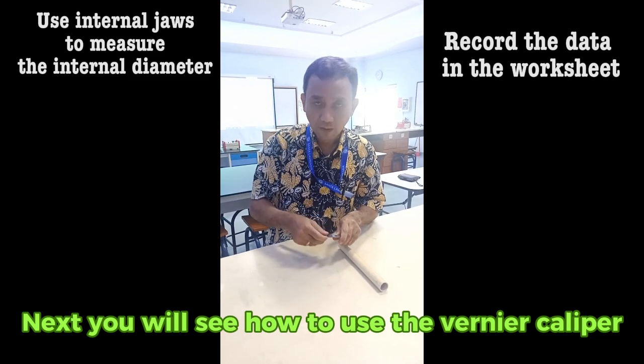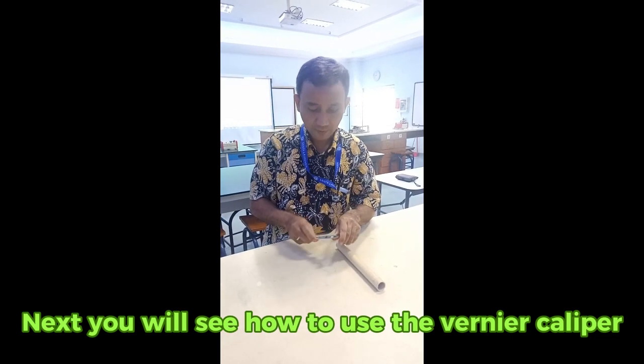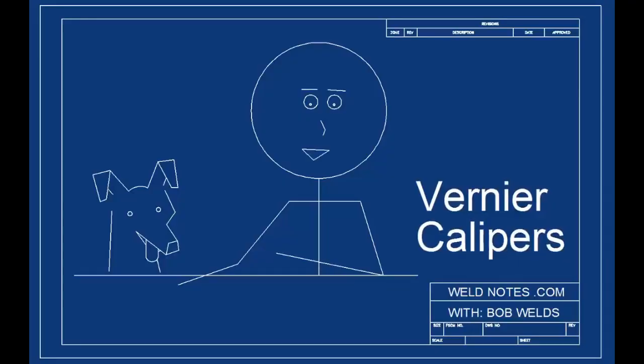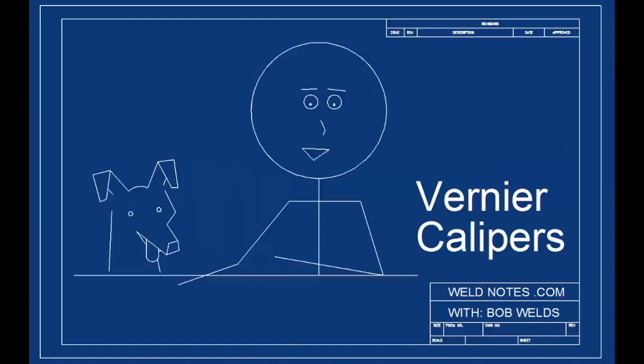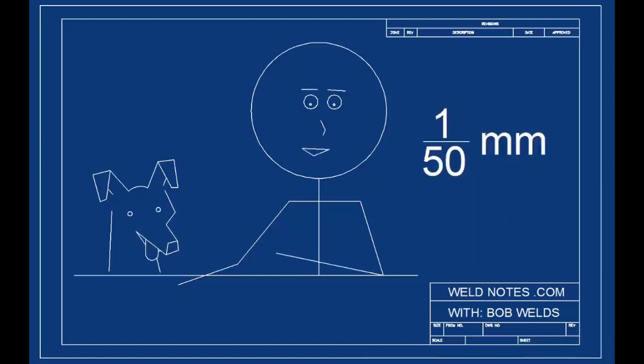Next you will see how to use the vernier caliper. Hi, I'm Bob Welds and this is how to read a metric vernier caliper. There are different kinds of vernier scales designed to do different jobs, but they all work pretty much the same way. Today we're going to look at a metric vernier designed to measure to the nearest 1/50th of a millimeter. That is 0.02 millimeters.